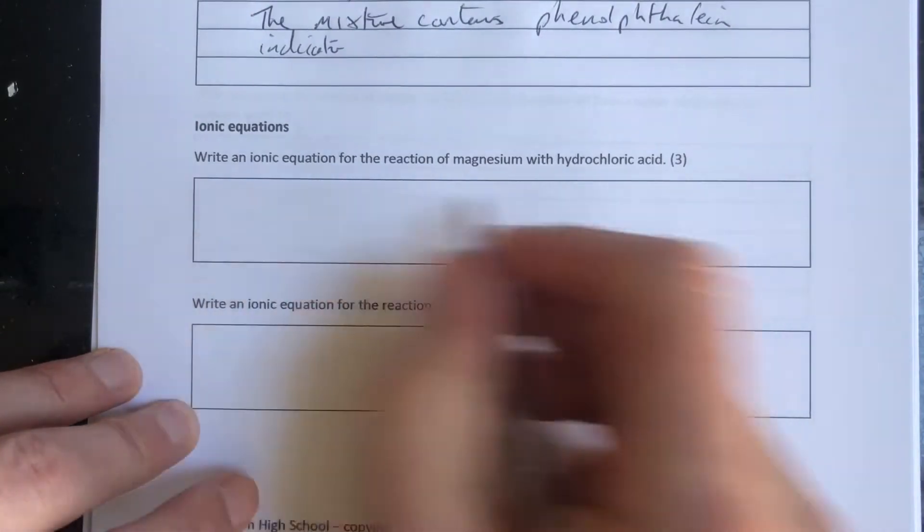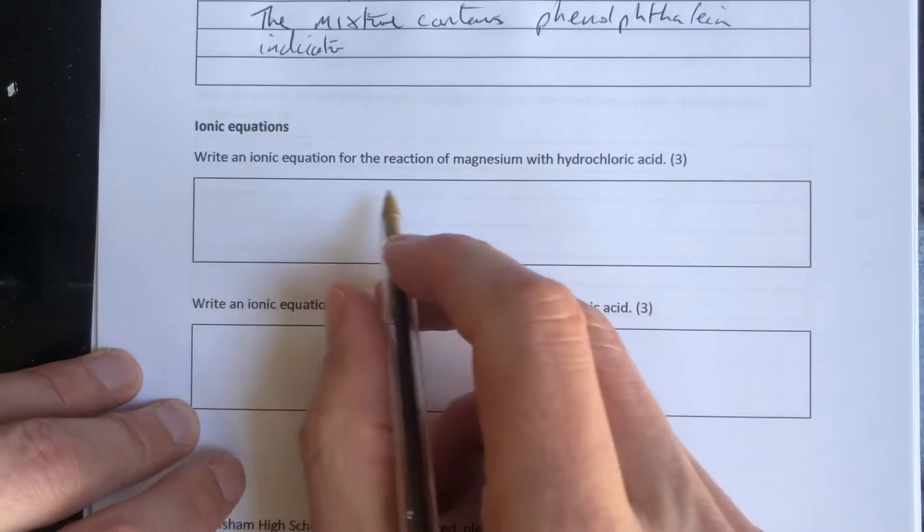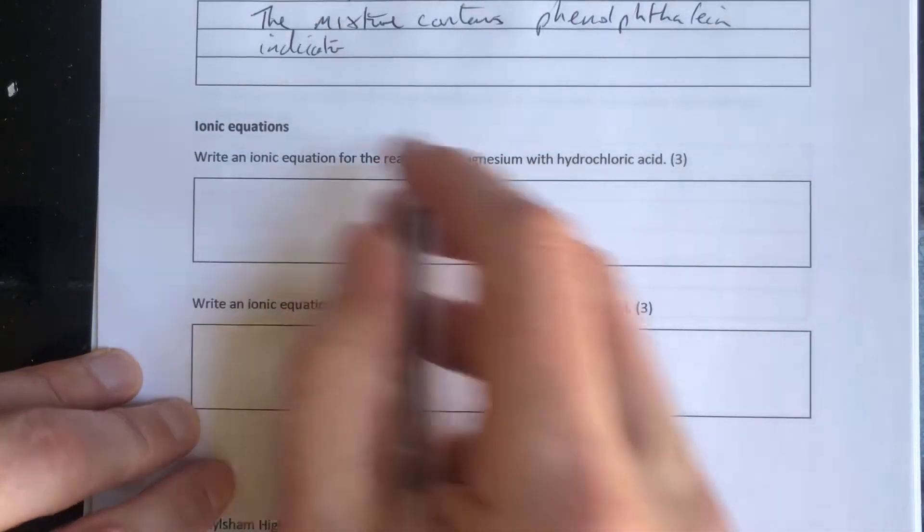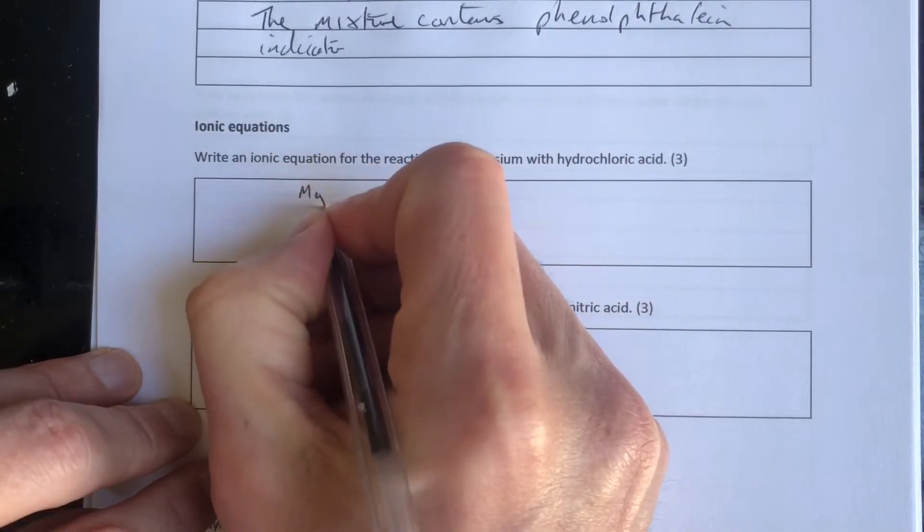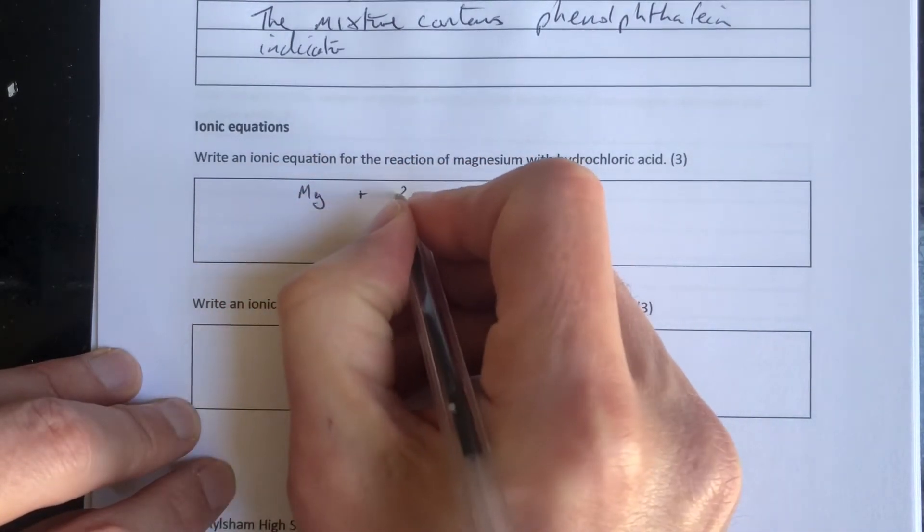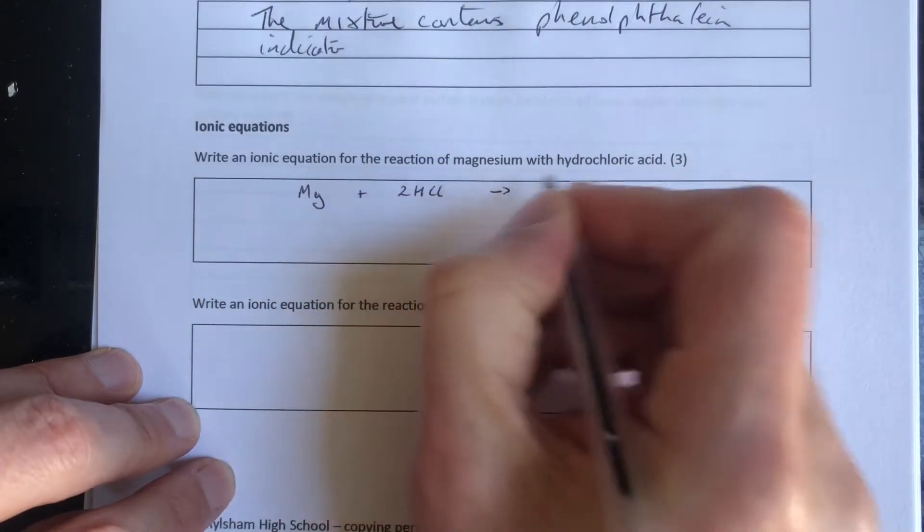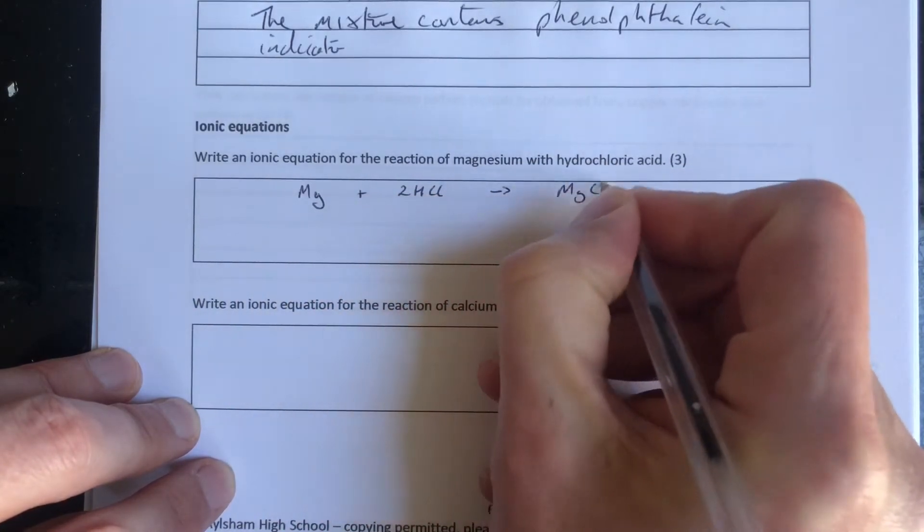The best way to have a go at ionic equations is to get the normal symbol equation out first. So we've got magnesium reacting with hydrochloric acid. I'm just going to do this straightforward symbol equation for this one. Magnesium reacting with hydrochloric acid. This is what this looks like.